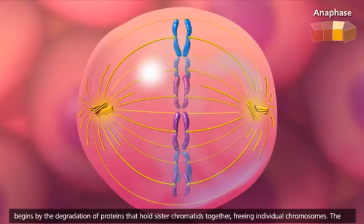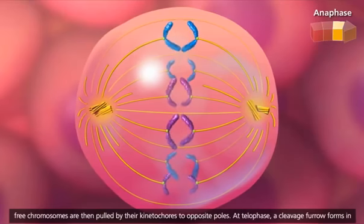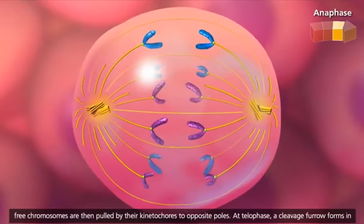Anaphase begins with the degradation of proteins that hold sister chromatids together, freeing individual chromosomes. The free chromosomes are then pulled by their kinetochores to opposite poles.